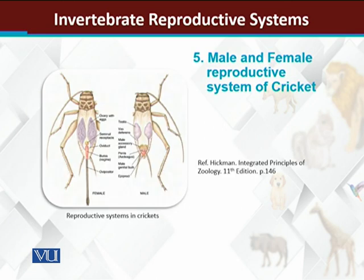This structure is specifically about male crickets. Crickets are basically invertebrates - arthropods. The female organs are the same generalized structure, repeated with proper detail. There are two ovaries, then the oviduct, then the body of the vagina, which leads to the gonopore.